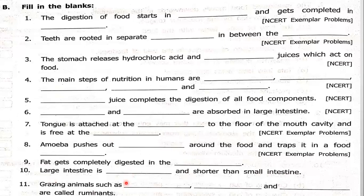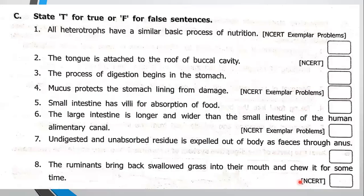Grazing animals are called ruminants. Which animals are ruminants? Grazing animals such as cows, buffaloes, goats, and sheep are called ruminants — grass-eating animals. Now we will see the true or false questions.